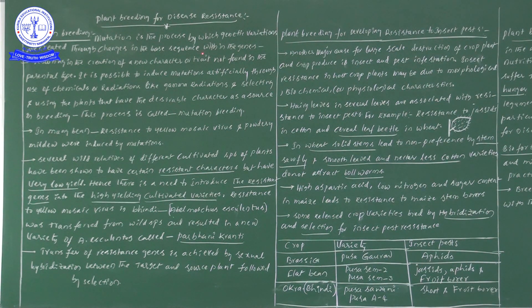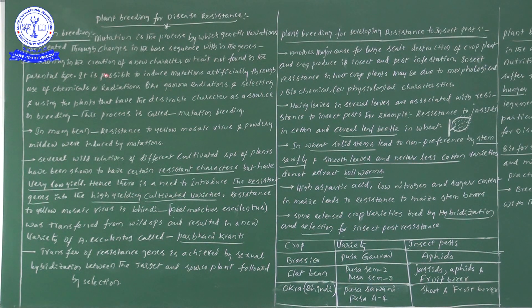When any kind of mutational changes or base sequence changes occur, the result is the creation of new characters or traits — characters not found in the parental type, because we have changed the nitrogen base sequence within the genes.